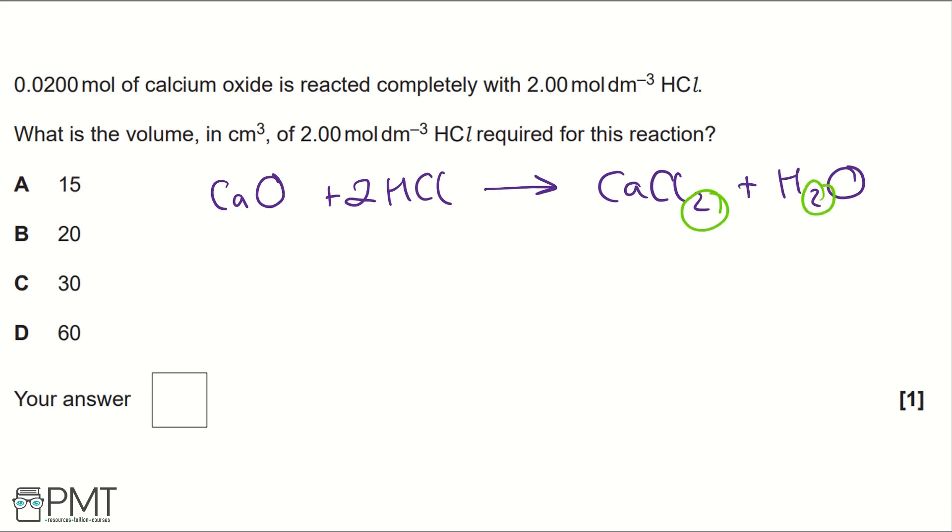First we need to factor in the molar ratio. We've got a 1 to 2 molar ratio, so the moles of hydrochloric acid is 0.02 multiplied by 2, which gives us 0.04 moles of hydrochloric acid.